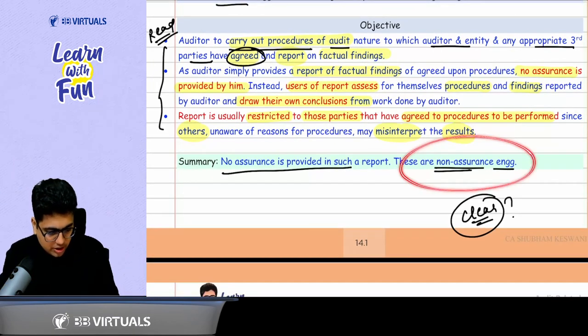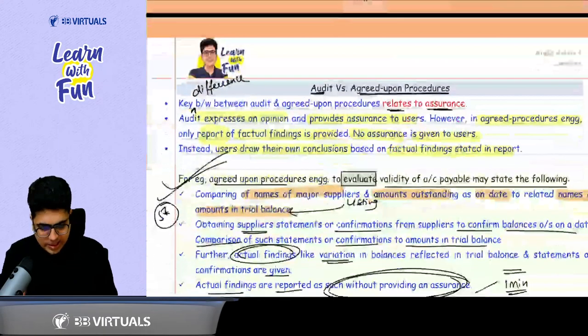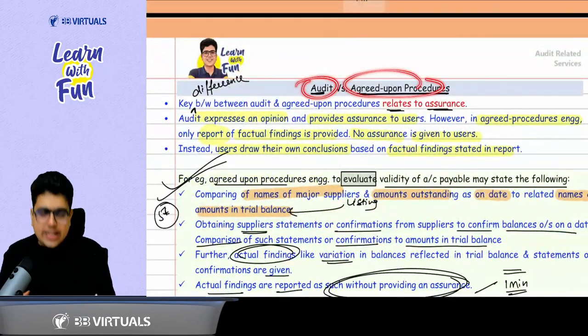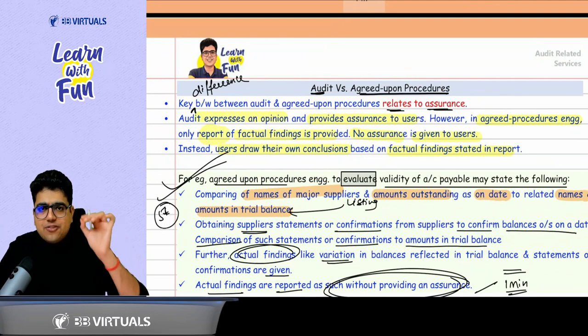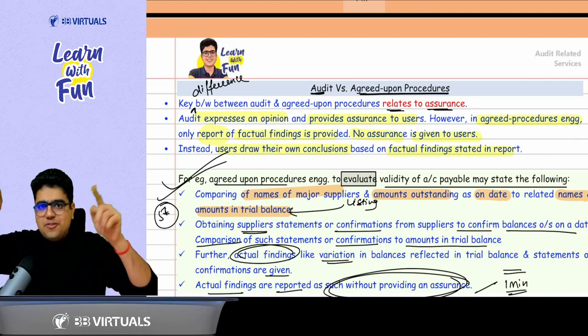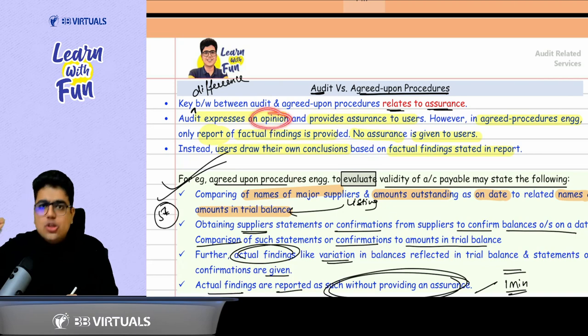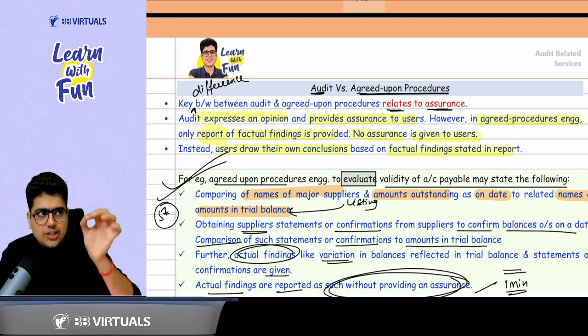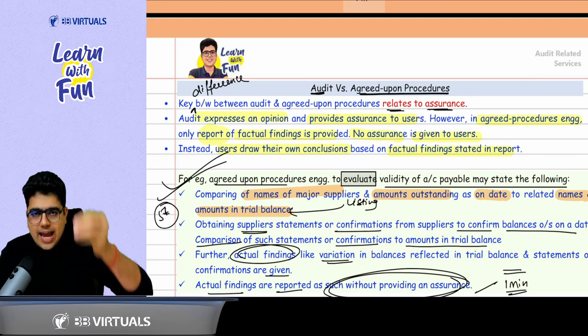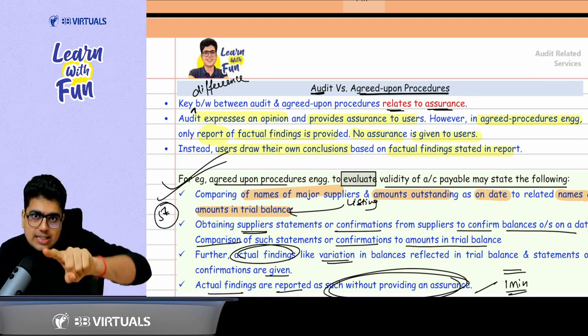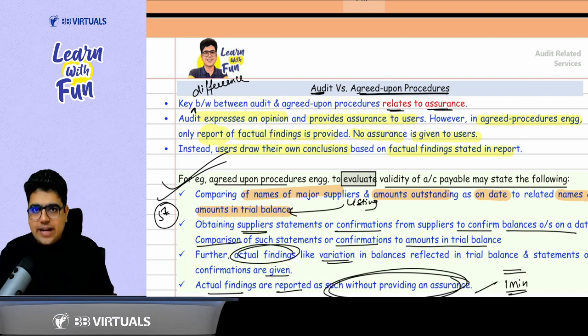That's why these are also called non-assurance engagements. Now, what is the difference between audit and agreed upon procedure? The difference is related to assurance. In audit, you give a reasonable assurance that whether the financial statement as a whole are free from material misstatement, whether due to fraud or due to error. So you express an opinion. But when it comes to agreed upon procedures, you just need to mention the procedures performed and the factual findings.